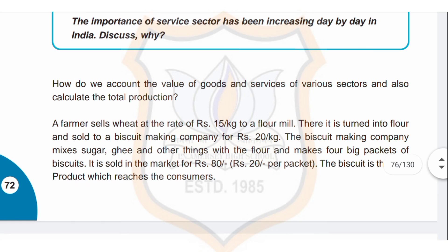How do we account for the value of goods and services of various sectors and calculate total production? For example, a farmer sells wheat at rupees 15 per kg to a flour mill, where it is turned into flour and sold to a biscuit-making company for rupees 20 per kg. The biscuit-making company mixes sugar, ghee and other things with the flour and makes 4 big packets of biscuits, sold in the market for rupees 80 — that is rupees 20 per packet.